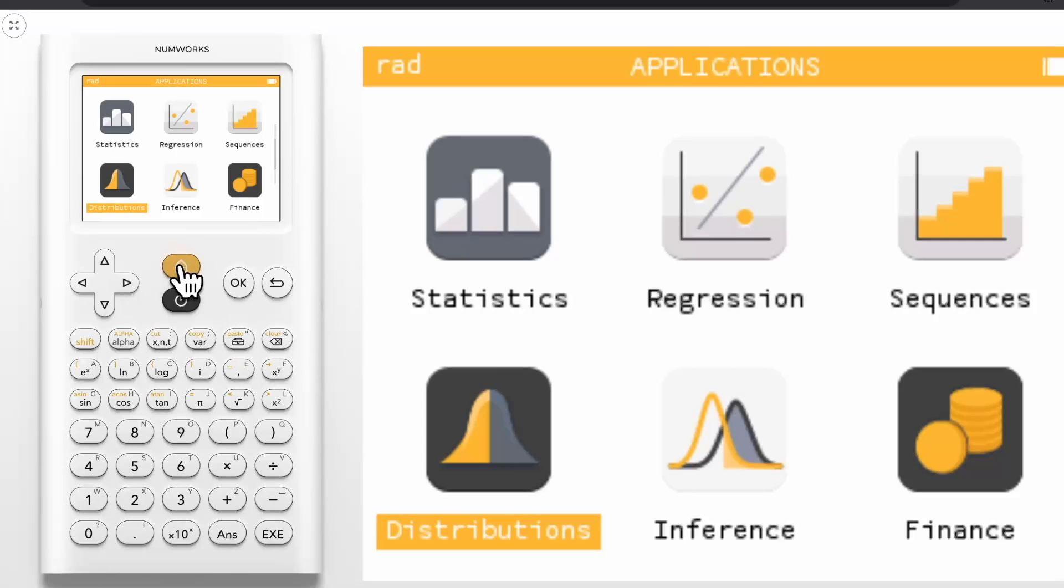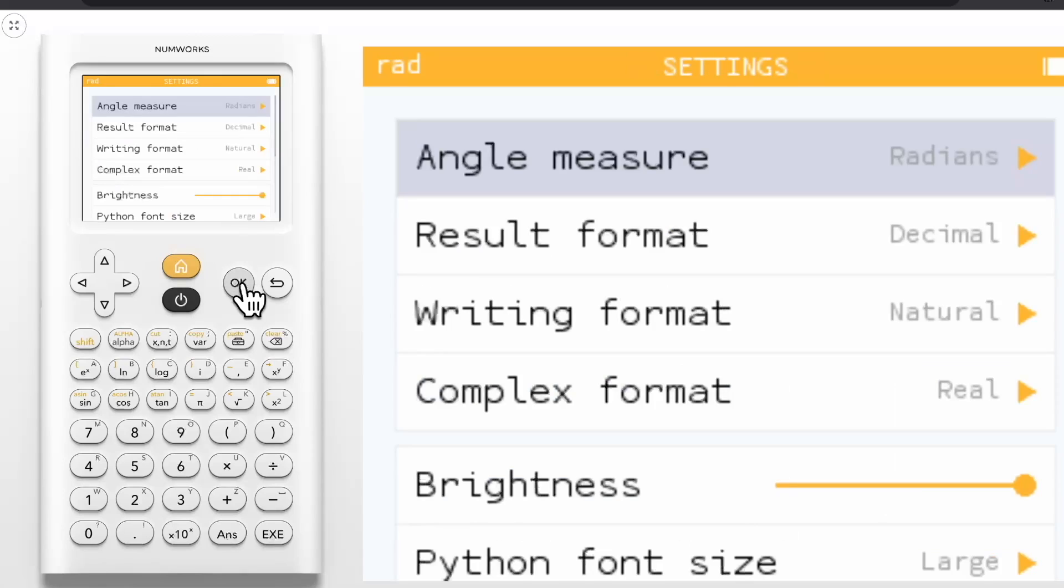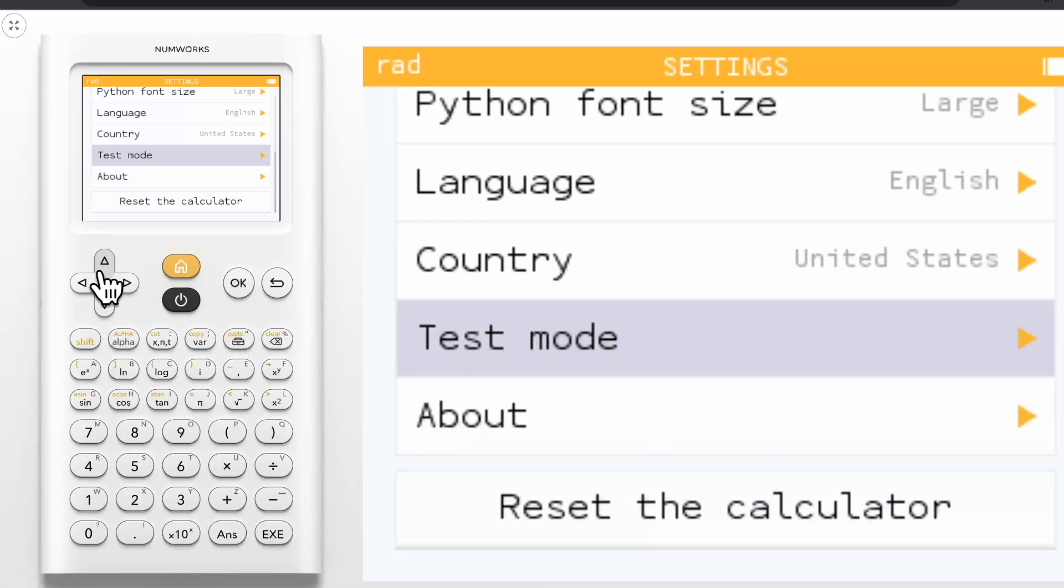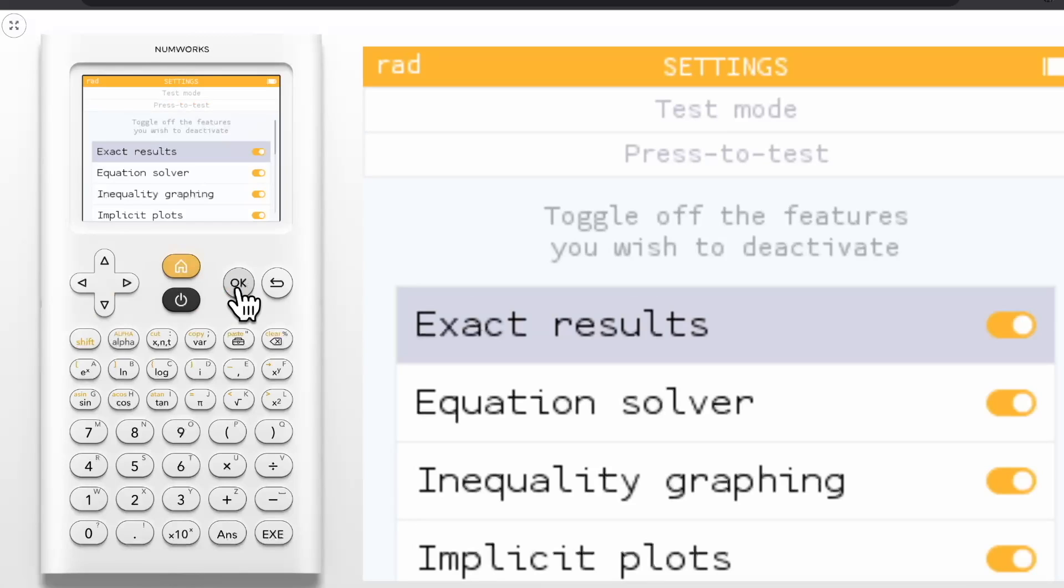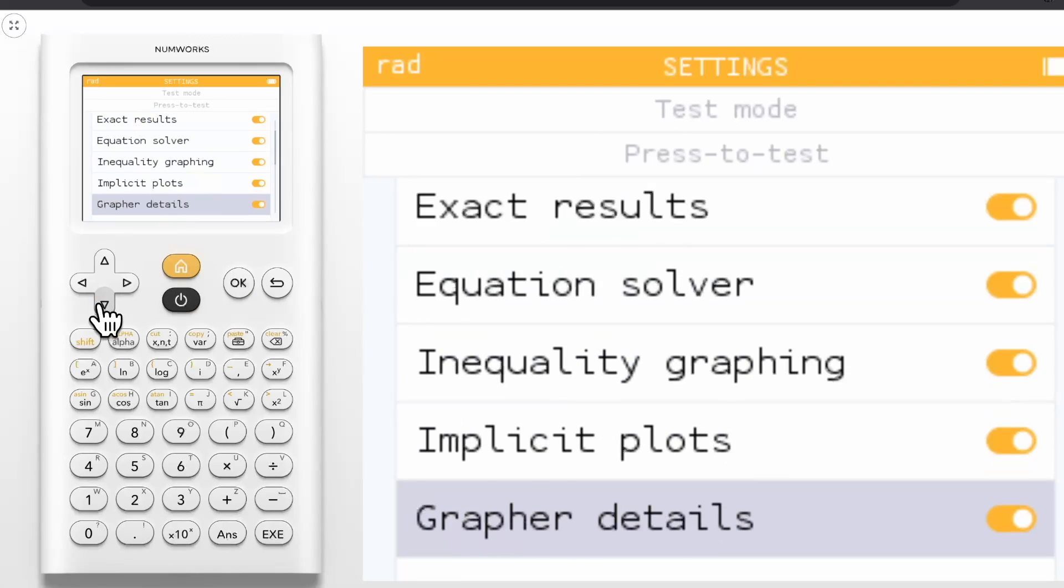Back on the home screen, some final things to note in the settings application. Now at the bottom of the settings we have test modes available. Here is where you can find the press to test section of the calculator that allows you to disable individual aspects of the calculator. The only new update in this section is we've split implicit plots and grapher details into two separate sections. Now you can choose to turn off the graph details but still keep the ability to do implicit equations and vice versa.